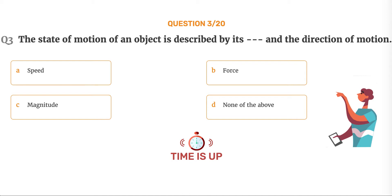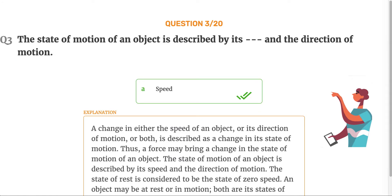The correct answer is Option A: Speed. A change in either the speed of an object, or its direction of motion, or both, is described as a change in its state of motion. Thus, a force may bring a change in the state of motion of an object. The state of motion of an object is described by its speed and the direction of motion. The state of rest is considered to be the state of zero speed. An object may be at rest or in motion — both are its states of motion.